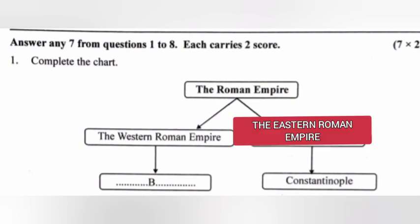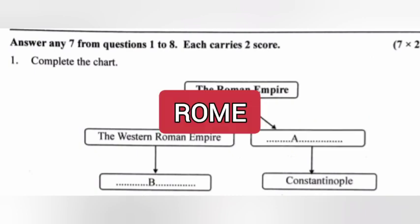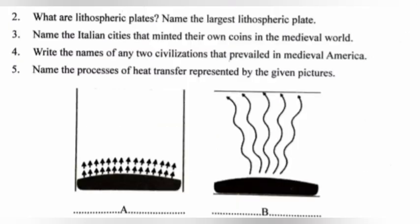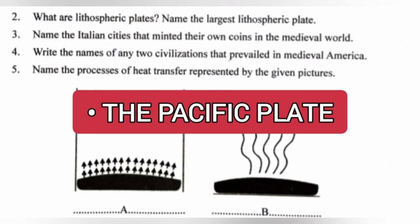Question 1: Complete the chart. Answer: a) the Eastern Roman Empire, b) Rome. Question 2: What are lithospheric plates? Name the largest lithospheric plate. Answer: Portions of the lithosphere which are several thousand kilometers wide and roughly 100 kilometers thick are called lithospheric plates. The largest is the Pacific Plate.